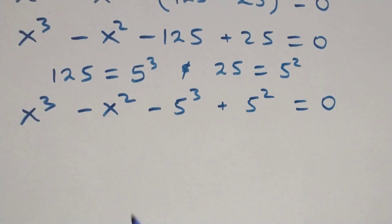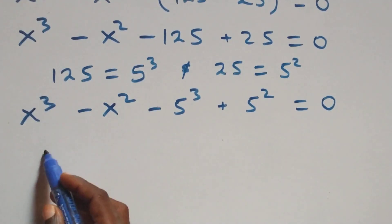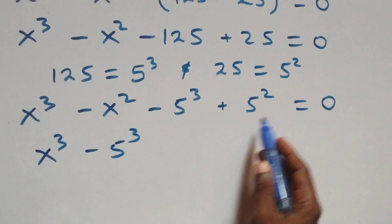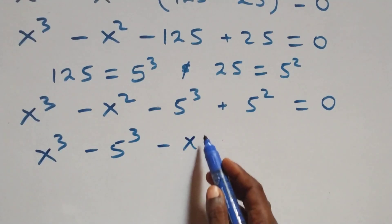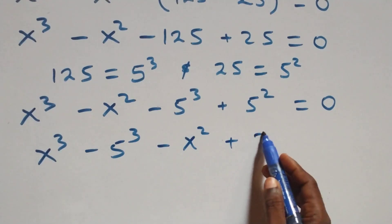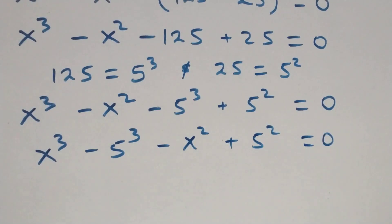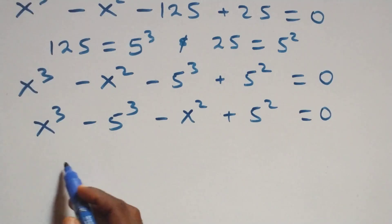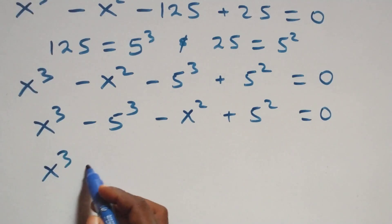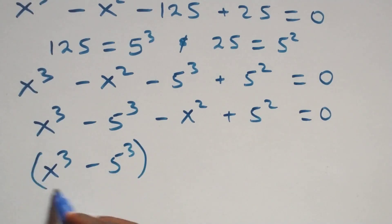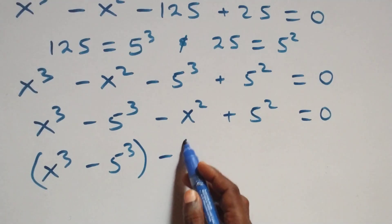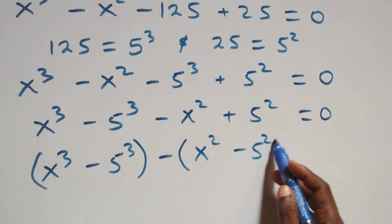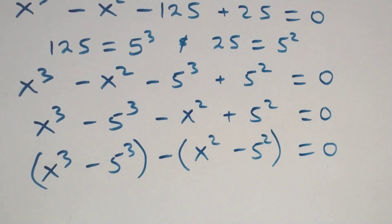Rearranging, we bring the powers of 3 together: x raised to the power 3 minus 5 raised to the power 3, and the powers of 2 together: minus x raised to the power 2 plus 5 raised to the power 2, equals to 0. We can write this as (x³ - 5³) minus (x² - 5²) equals to 0.